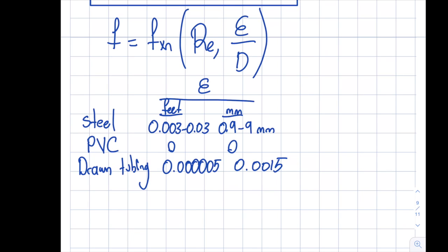As you can see this is extremely smooth and this is commonly used in industry as well. Obviously the lower this epsilon value, the lower the loss in my system is going to be, so it is preferable to have something that is more smooth as opposed to more rough. So now we understand epsilon.